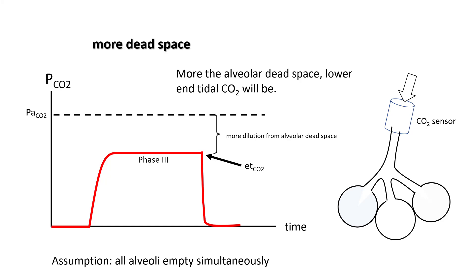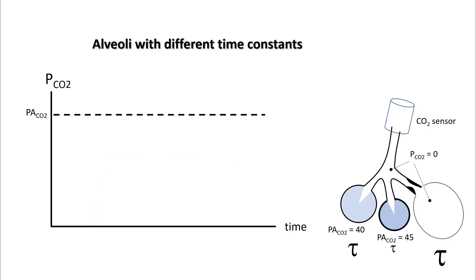Let's understand what happens when alveoli have different time constants. Here we have three different alveoli with different time constants, so they have different levels of alveolar CO2. The CO2 in dead space is zero, so the first part of the capnogram still looks the same because this is the expulsion of anatomical dead space air from trachea and bronchi onto the CO2 sensor.